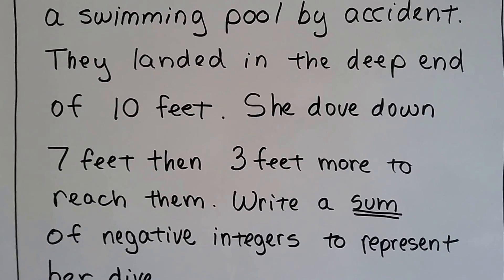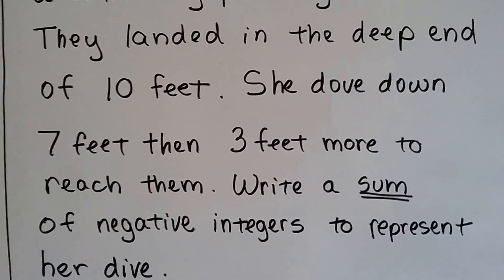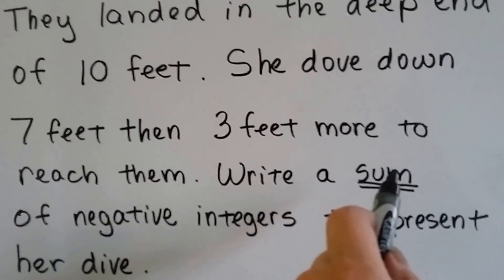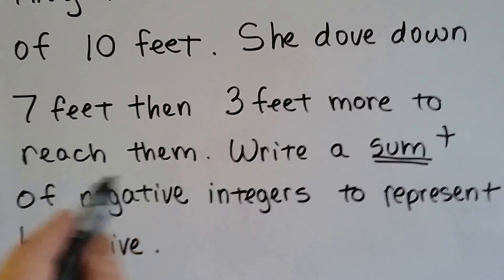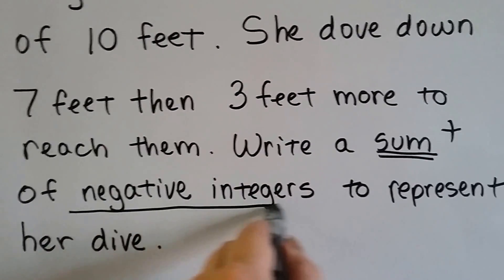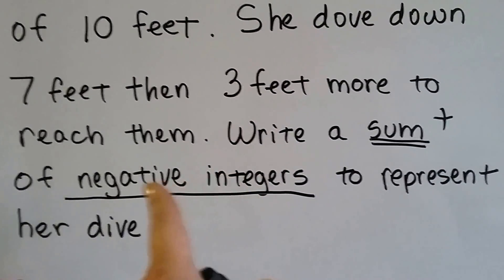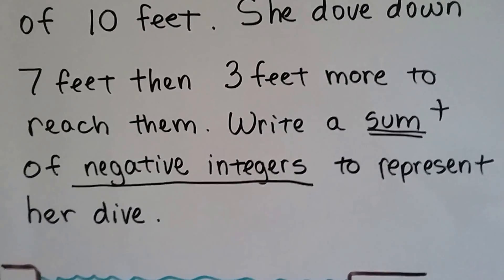Write a sum of negative integers to represent her dive. So again, we need to write a sum. So that means it's going to be a plus, right? It's going to be a plus in the equation of negative integers. So that means we're going to have negative numbers that we're adding together to represent her dive.